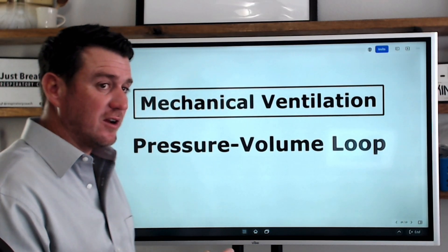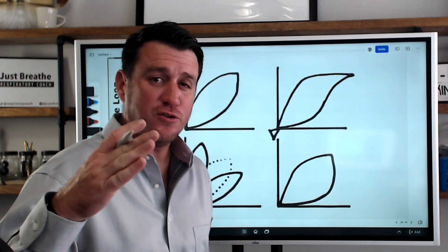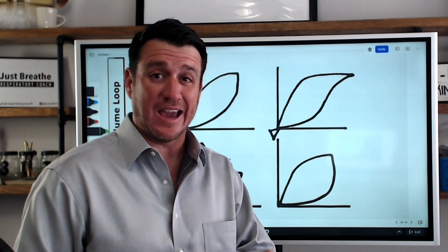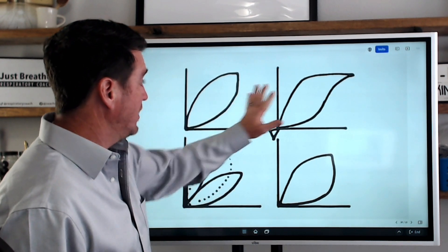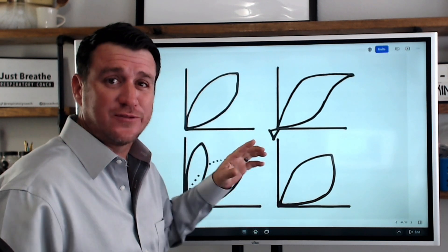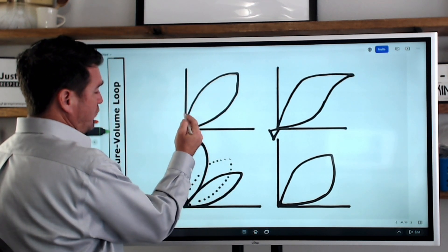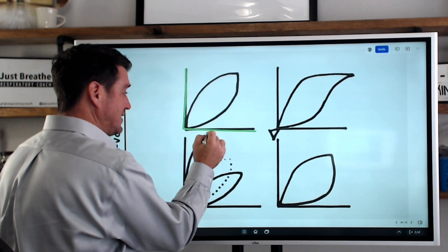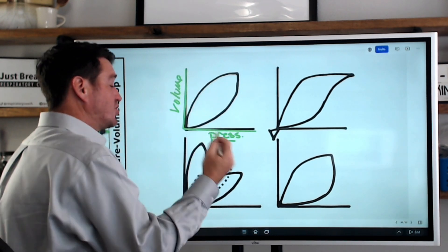Alright, so as I mentioned, let's jump in here and talk about the pressure volume loop. What is it? How do you recognize normal? How do you recognize abnormal? How can you use it to help you take better care of your mechanically ventilated patients? Before we go any further, you see here we've got a bunch of graphs. These are all pressure volume loops. This one is normal. So let's first identify what normal looks like and what we're looking at. When we look at this graph, what we notice is that we have an x-axis and a y-axis. Now the x-axis is pressure.